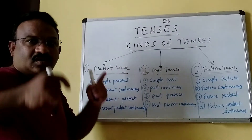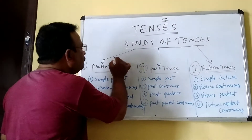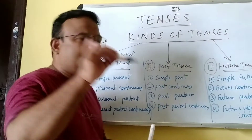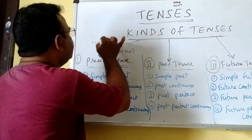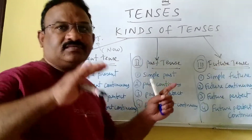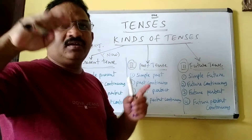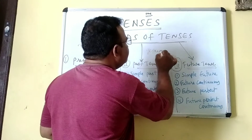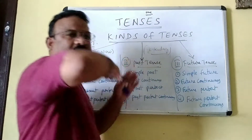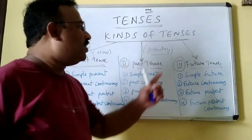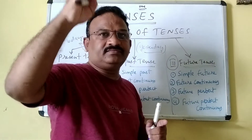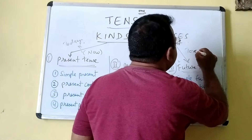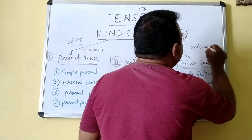Present tense means now — today's. Past tense means it has already happened, that means yesterday. Future tense means it will happen in the future, that is tomorrow.